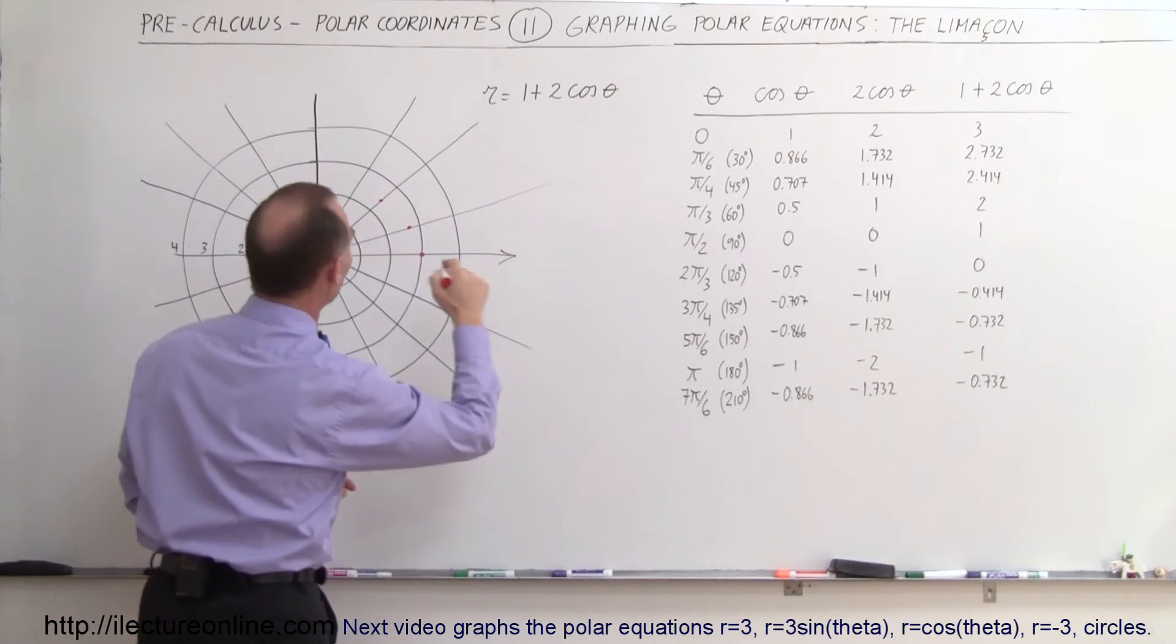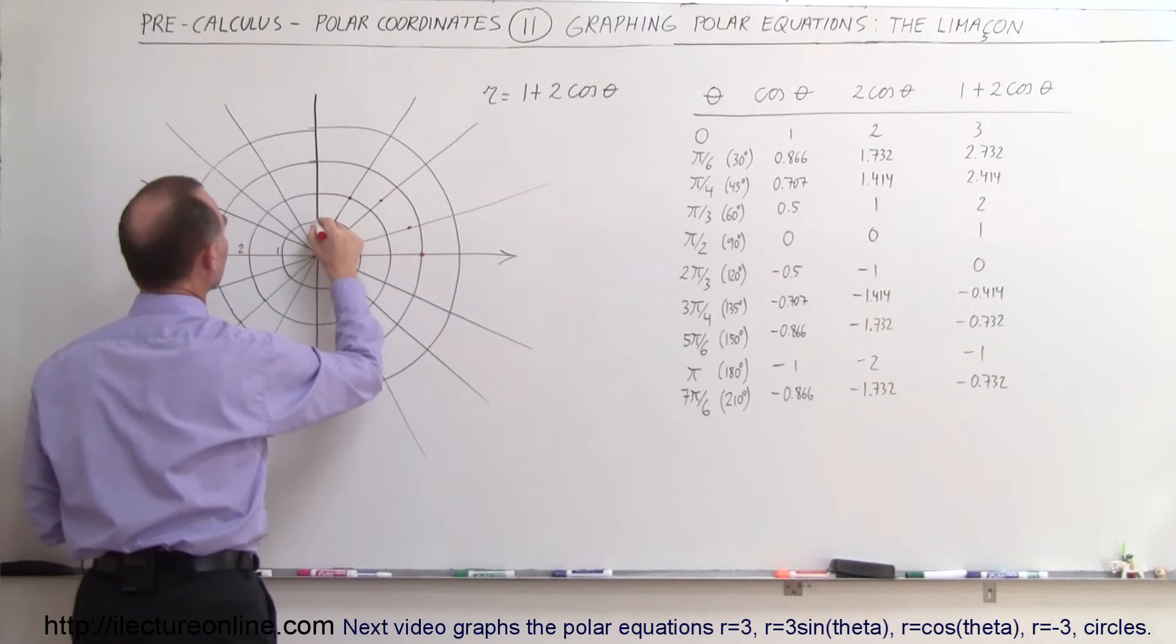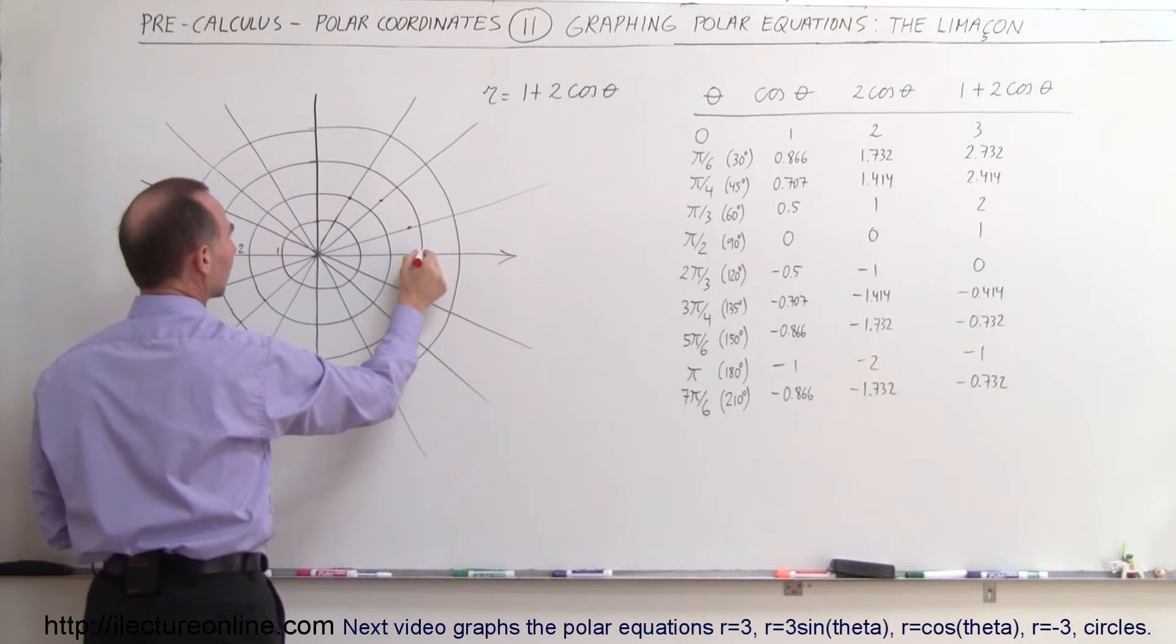At a 60 degree angle, r would be 2. At a 90 degree angle, r would be 1. So you can see that we already have this curve right here, which we can go ahead and complete now.